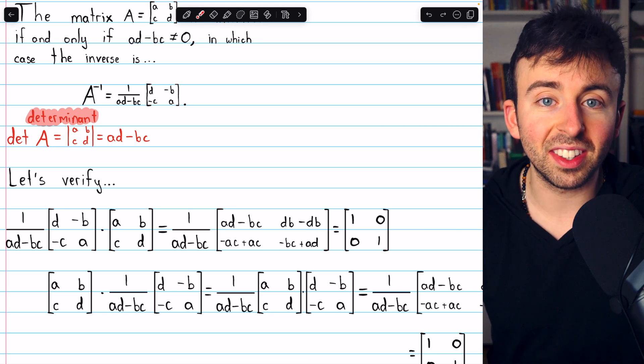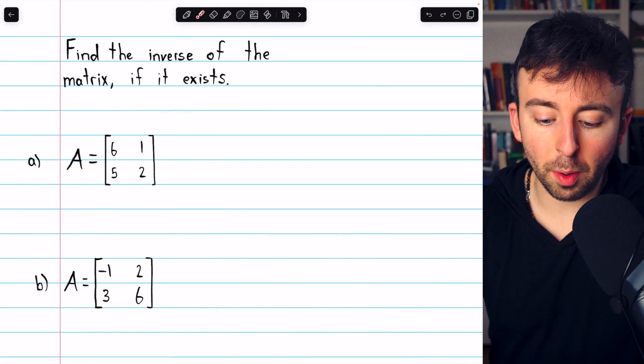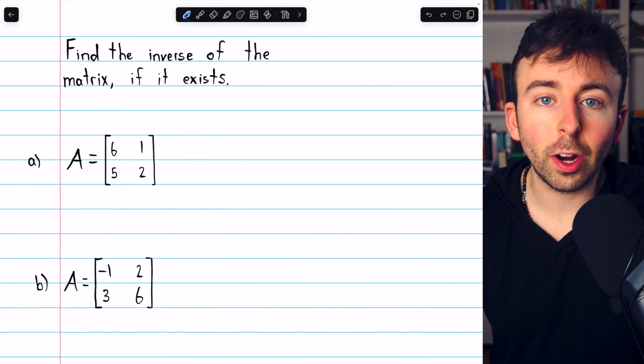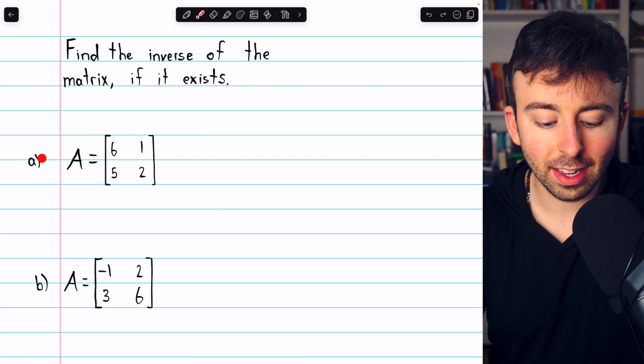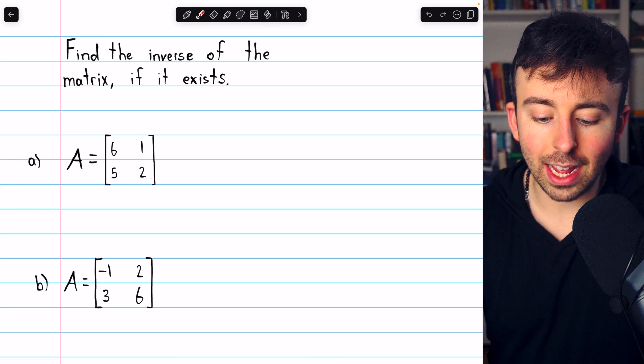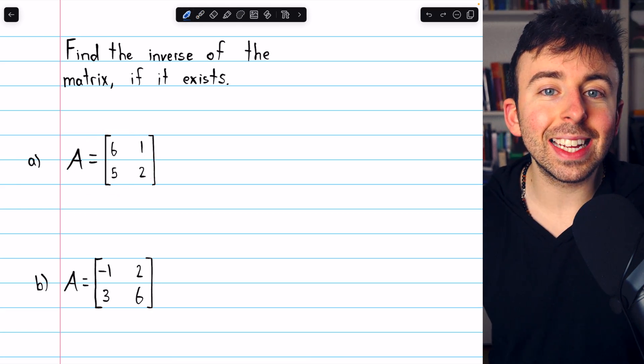Let's go ahead and try it with a couple of examples. Here are two problems from Howard Anton's Elementary Linear Algebra textbook. We are going to find the inverse of each matrix if it exists.